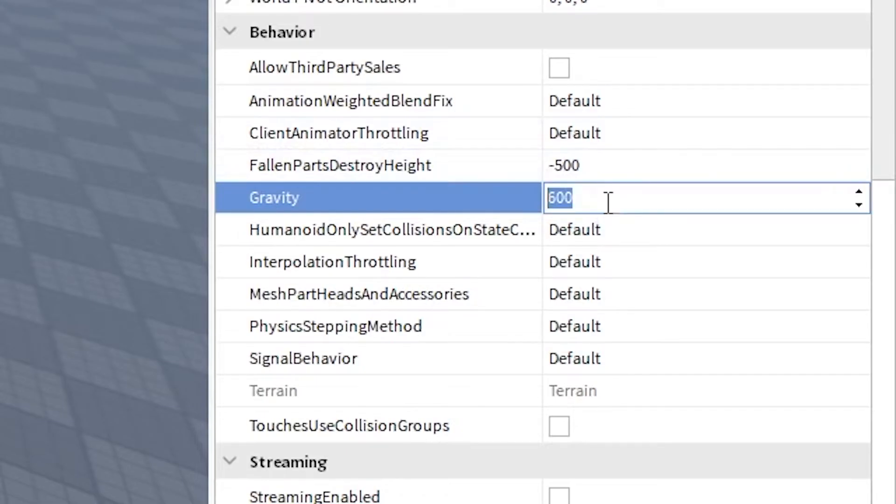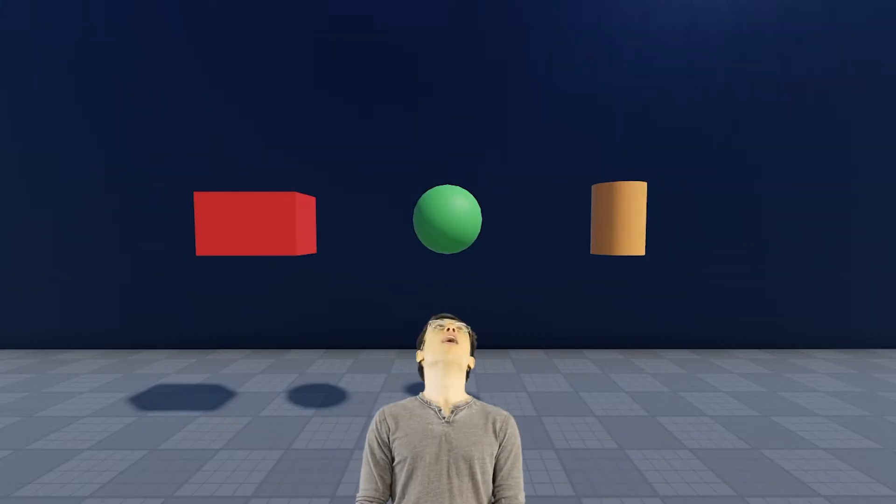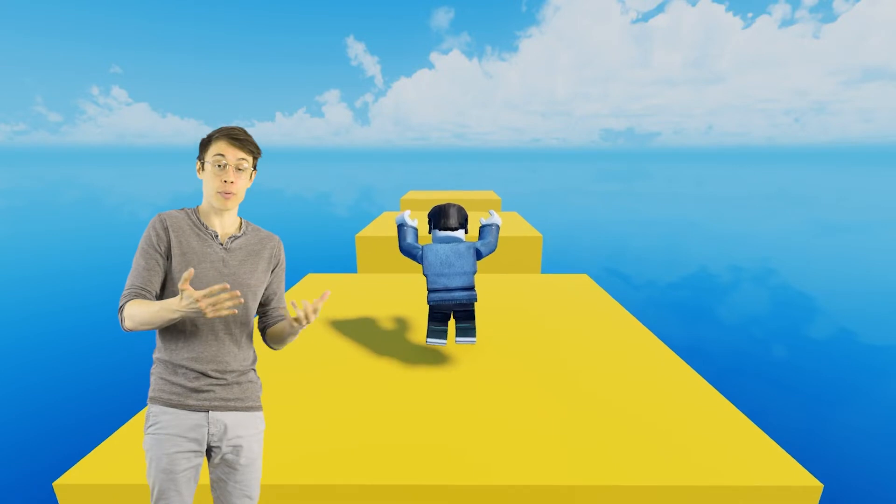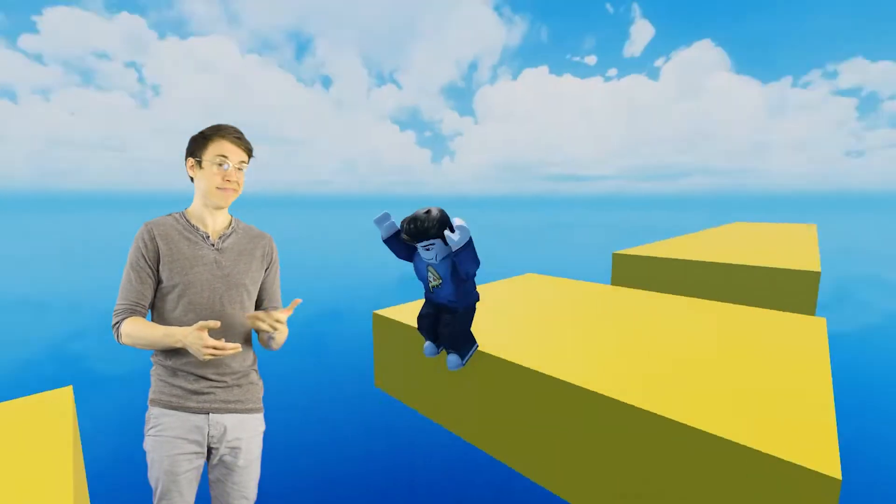If you set the gravity to zero, objects will just float in mid-air. Wow. However, because of a Roblox quirk, you also can't jump when there's no gravity, so just be careful with it.